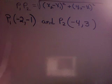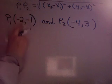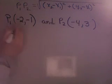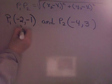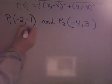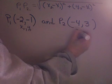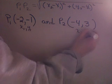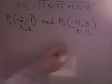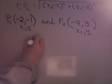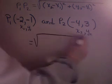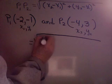Alright, so if you have the two points, I like to identify what I'm going to use for the x's and y's. So the first point I label x sub 1, y sub 1. The second point I label x sub 2, y sub 2. Now, it's easy to use the formula by just replacing my substituted values into the formula.